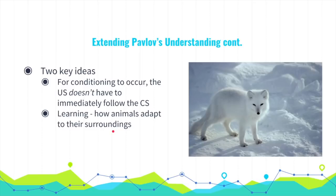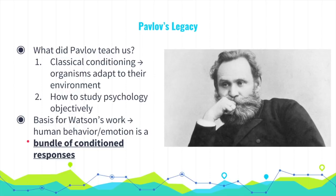Pavlov taught us that classical conditioning is how organisms adapt to their environment and how to study psychology objectively. Watson built on Pavlov's work, concluding that human behavior and emotion is a bundle of conditioned responses. For example, Watson conditioned his infant son Albert to fear rats: knowing Albert feared loud noises, he banged a hammer on a metal bar each time he showed Albert a rat. After several repetitions Albert cried at the sight of the rat, and even generalized this fear to rabbits and dogs.